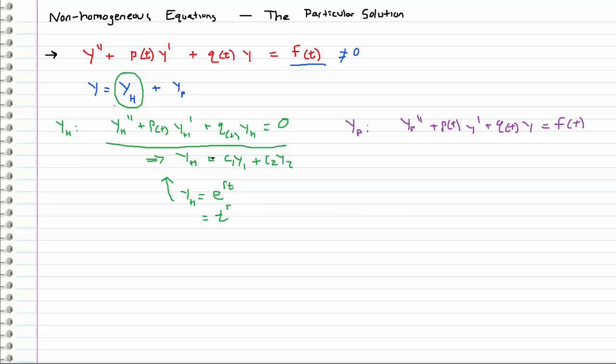We always assumed the homogeneous equation was some solution of like e to the rt or t to the r or something like that, depending on what the actual differential equation was.